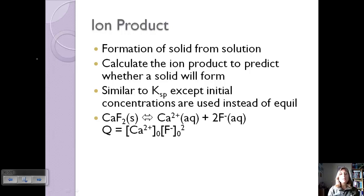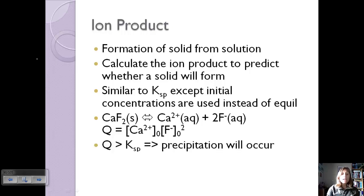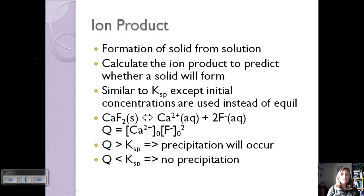For example, let's say we have calcium fluoride as a solid going to calcium ions and fluoride ions. The Q value is going to be the initial concentrations of the calcium and fluoride ions. If Q is greater than Ksp, precipitation will occur. If Q is less than the solubility product, there won't be a precipitation.